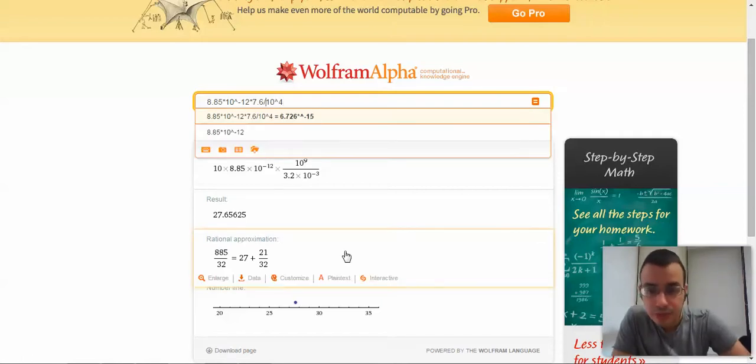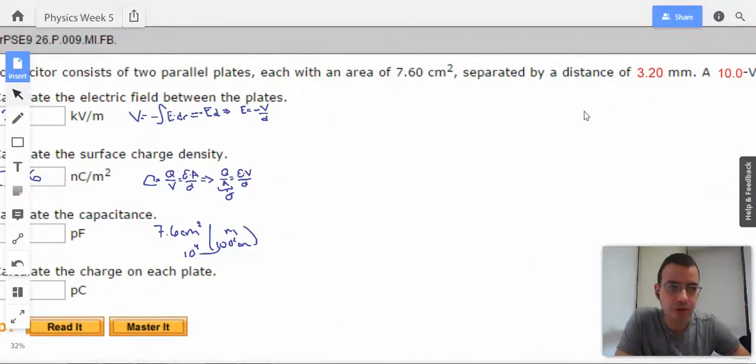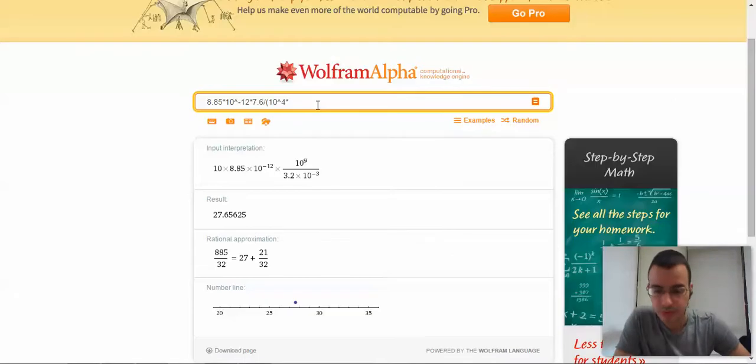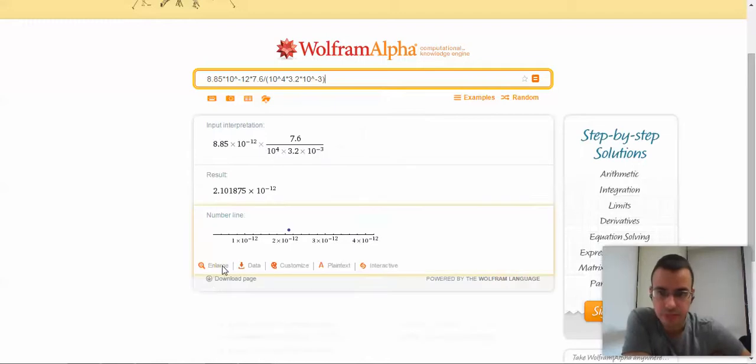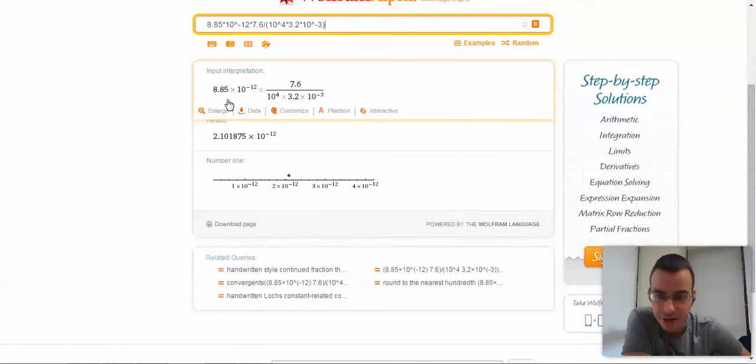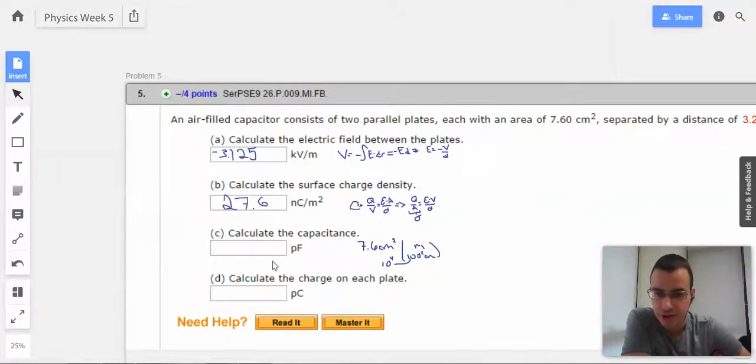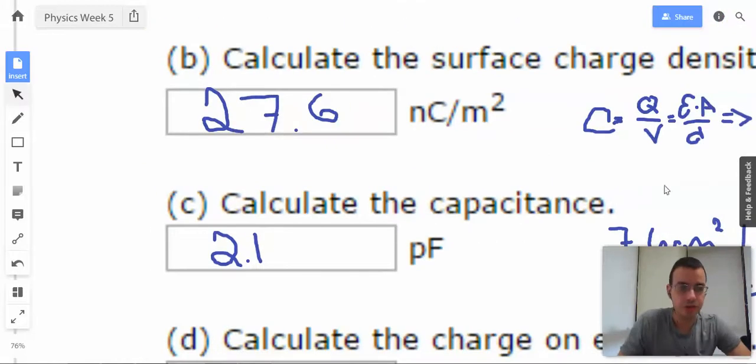We need the distance between the two, which is 3.2 times 10 to the negative 3rd. Do they want something in pico? Yes, so we probably got at least close to the right answer. This right here is epsilon naught, this is the area, this is the distance. So 2.1 picofarads.